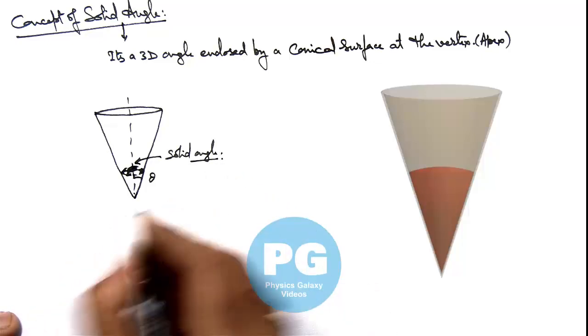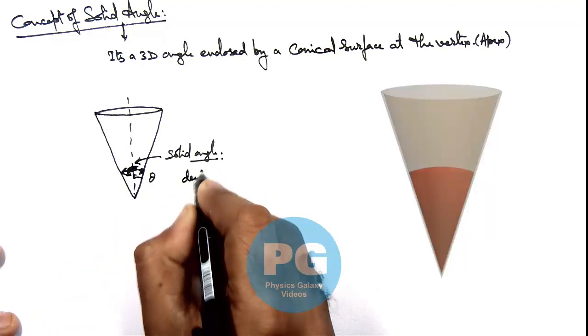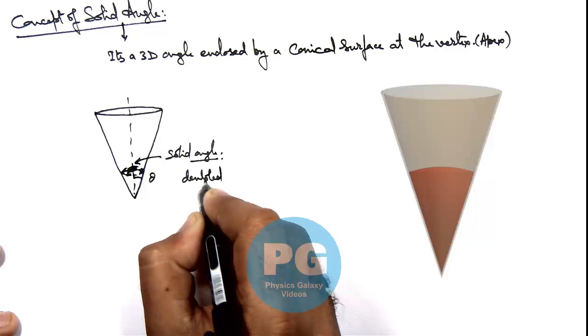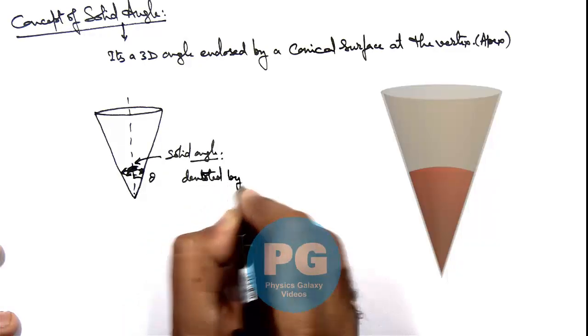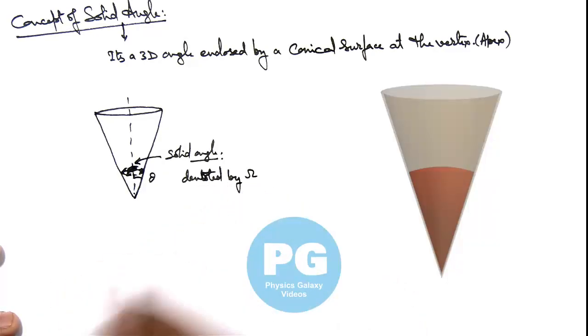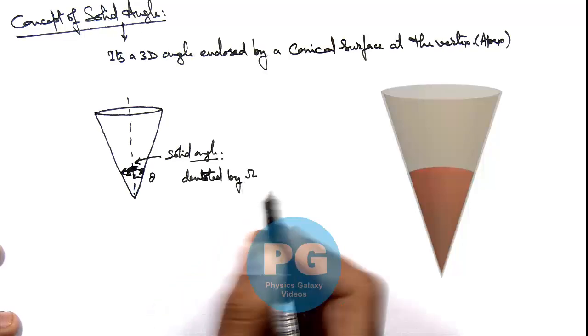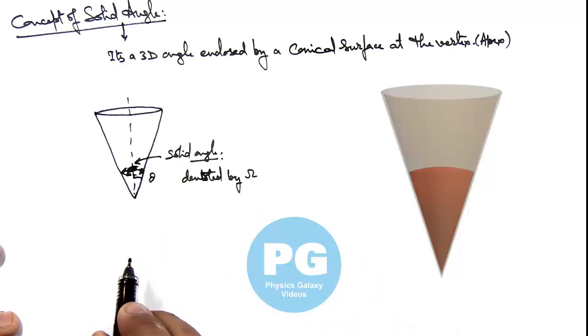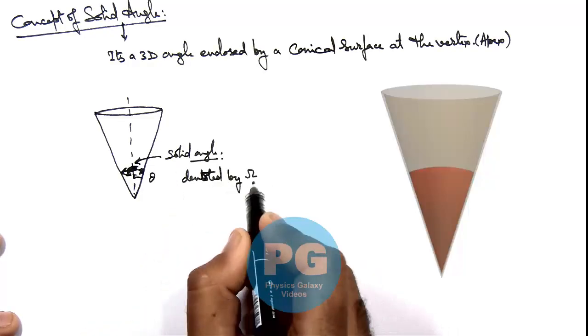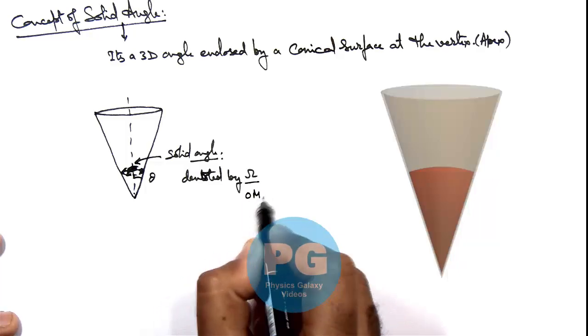And you need to be careful, this is denoted by the letter omega, which is the symbol of ohms you use in case of resistance calculation. So this solid angle is denoted by omega. This is a Greek letter we call omega.